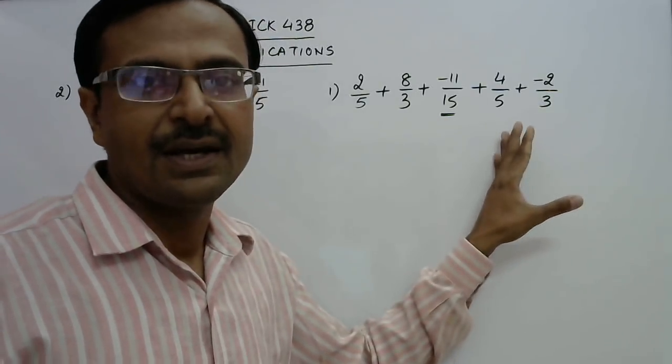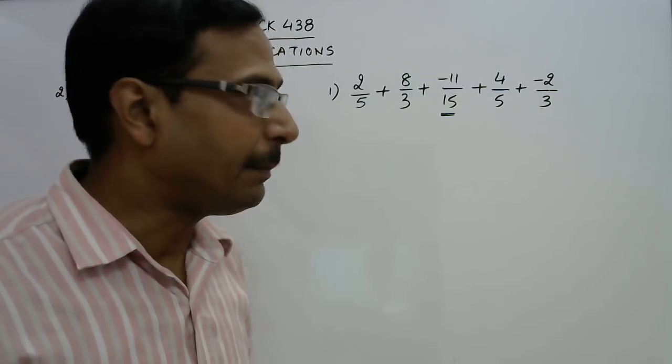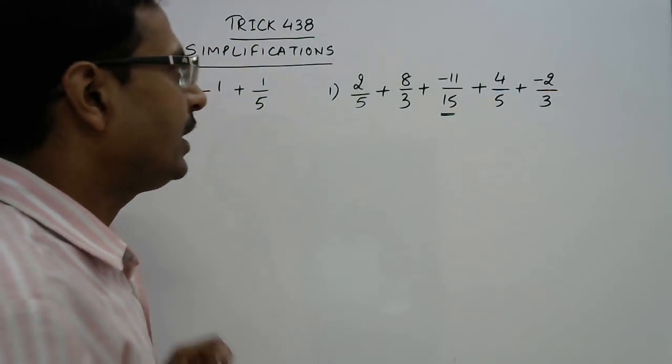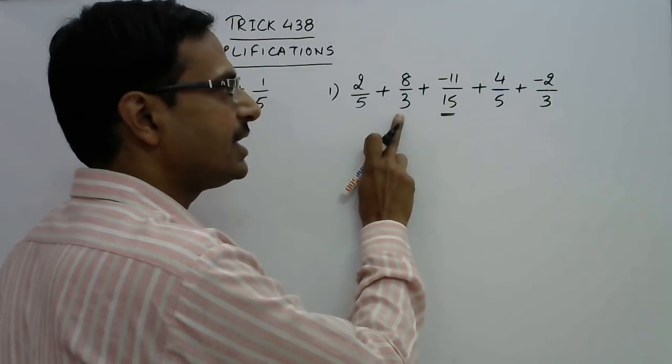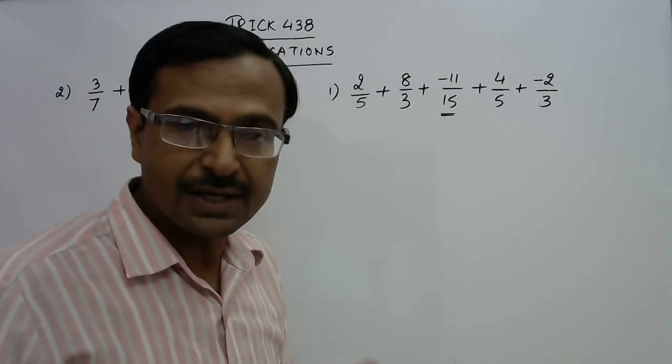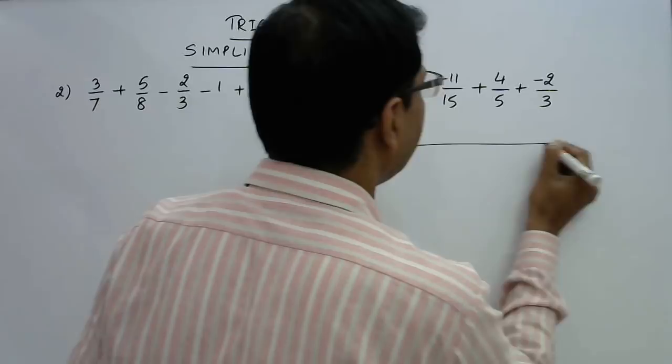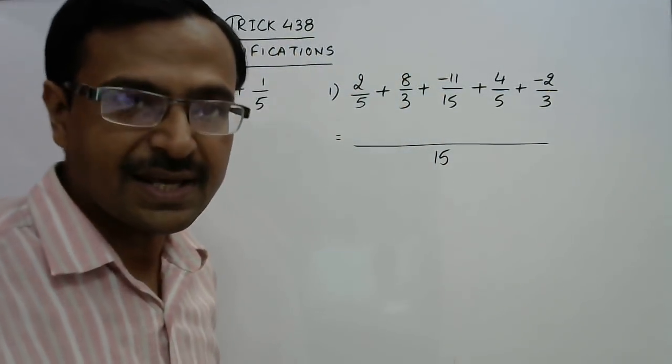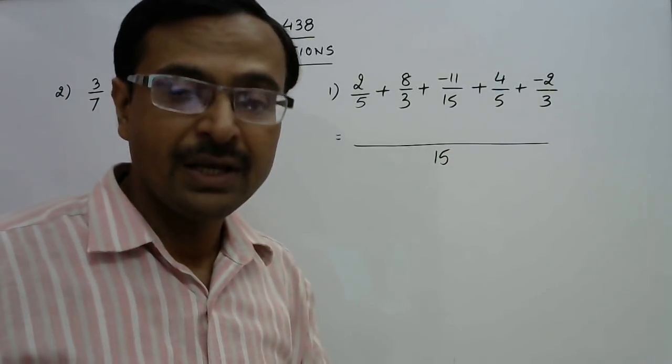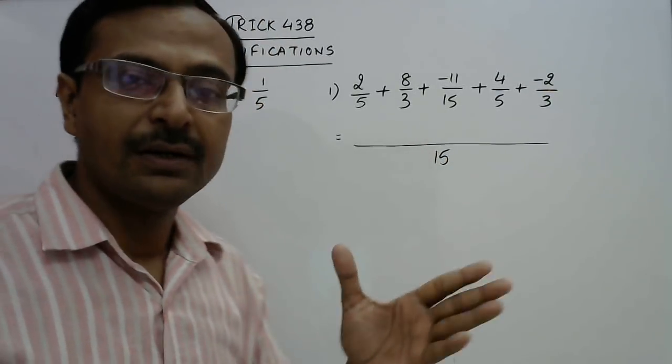In such cases taking LCM becomes very easy. You don't need to follow the traditional method of taking the LCM of all the 5 numbers in the denominator. Since 5 is a factor of 15, 3 is a factor of 15, again 5 and 3 both are factors of 15. So whenever such condition arises you can write the LCM of such numbers as the largest number itself. Remember all other numbers should be exact factors of the largest number. Then the largest number is the LCM.